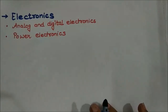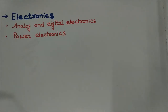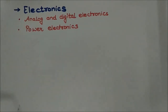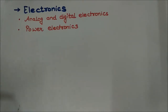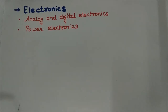The third category is Electronics, where you have to focus mainly on analog and digital electronics. You must know the basic concepts — what are analog and digital, what are analog converters and digital converters, what is an analog-to-digital converter, and the basic differences between them. You also need to prepare the basic concepts of power electronics.